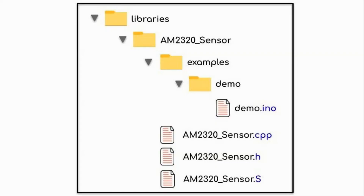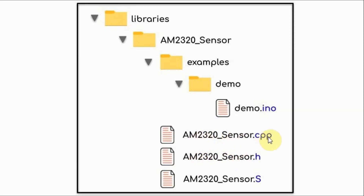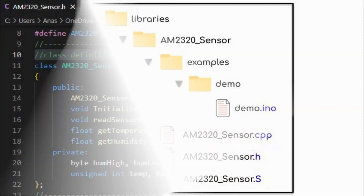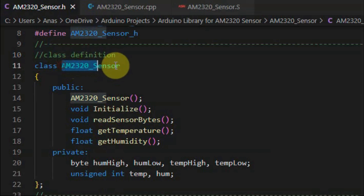Now we look at creating a library for the AM2320 sensor. This diagram shows the folder structure of the library. This is the folder of our library AM2320 sensor, which contains the examples folder and the source file, header file, and the S file. The header file is used to declare a class which will contain both public and private members, while the source file will be used to define these members, and the S file will contain assembly code that will be called from within the source file.